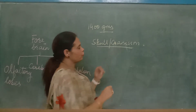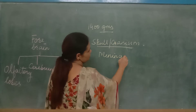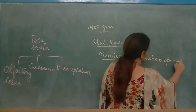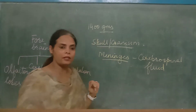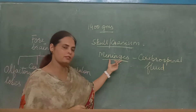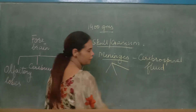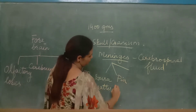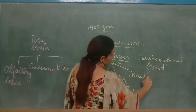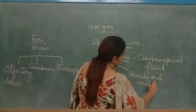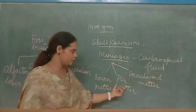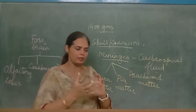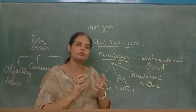Inner to the skull there are three layers known as the meninges. Within the meninges there is the cerebrospinal fluid. These three membranes, the meninges, protect the brain. The cerebrospinal fluid protects your brain from shocks and injuries — it is like a cushion in which your nervous tissue is well protected.